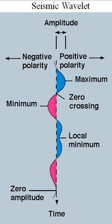The product of the uncertainties of time and frequency response scale has a lower bound. Thus, in the scalogram of a continuous wavelet transform of this signal, such an event marks an entire region in the timescale plane, instead of just one point. Also, discrete wavelet bases may be considered in the context of other forms of the uncertainty principle. Wavelet transforms are broadly divided into three classes: continuous, discrete, and multi-resolution-based.